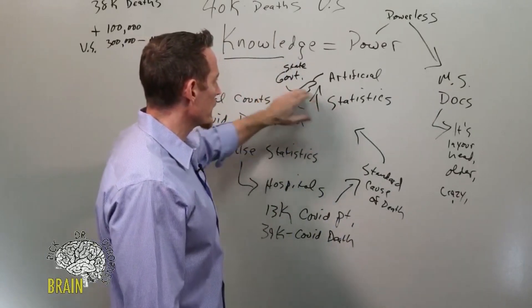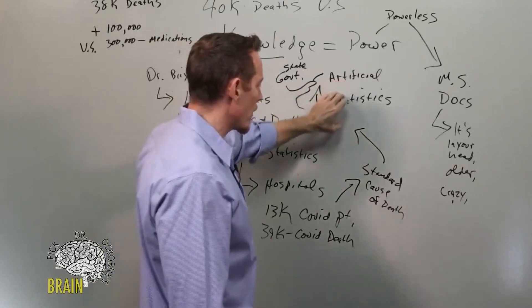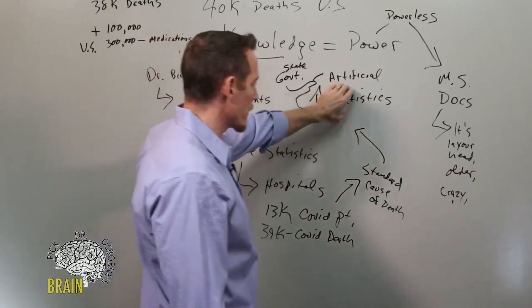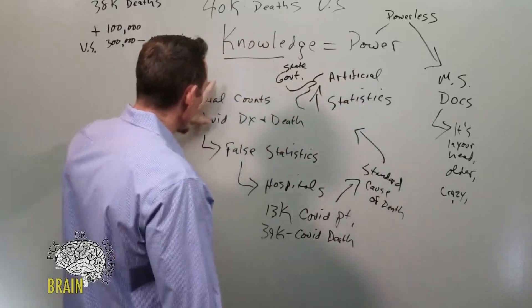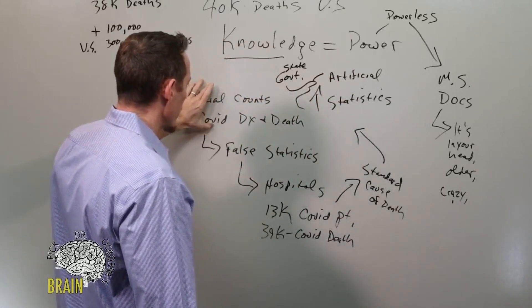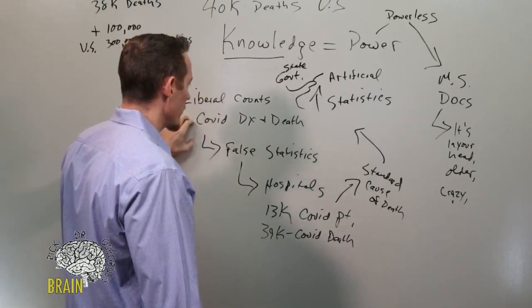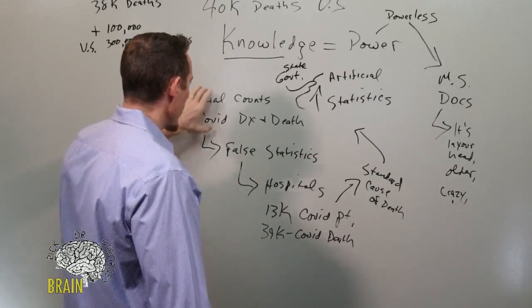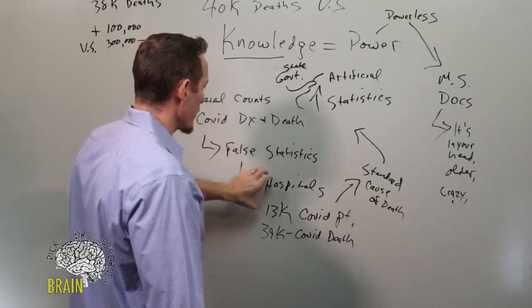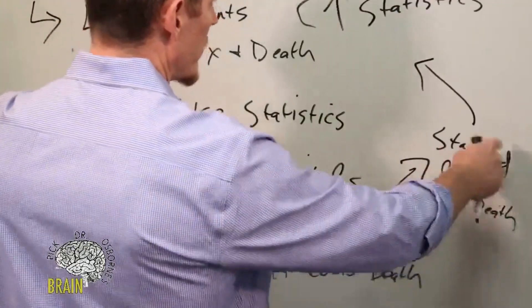So again, if we have artificial statistics and we have governors that are basing their decisions because these statistics are artificial, and the reason they're artificial is because the leaders are saying let's not really be scientific about how we're counting or how we're taking consideration about how COVID is diagnosed and who's dying from COVID or who's dying from other things.